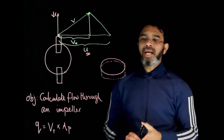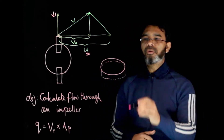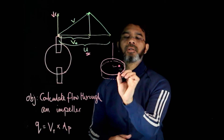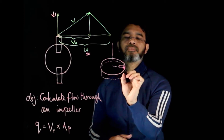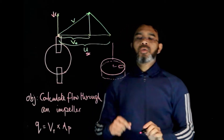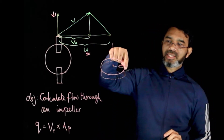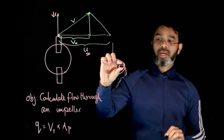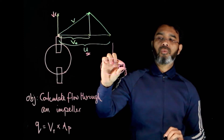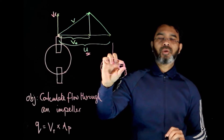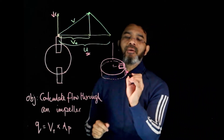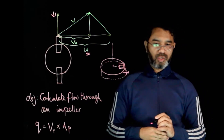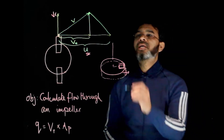Considering the radial flow and the area perpendicular to it: when the impeller rotates, it sweeps a circular area with a thickness equivalent to the width of the impeller. We need to find that area, and since the liquid is flowing out radially through this area, we need to find that radial velocity.